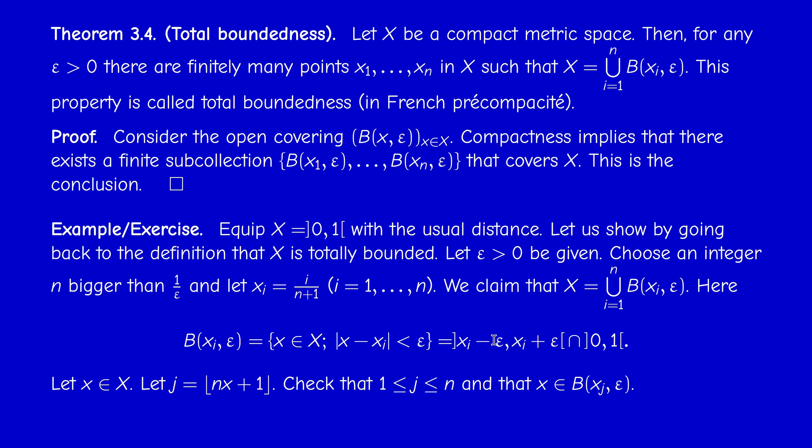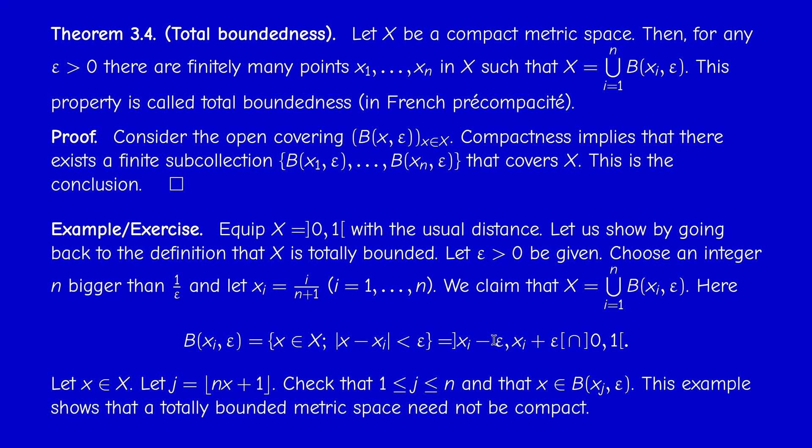Check that J is between 1 and n, and that x belongs to the ball of center x_J and radius epsilon. This example illustrates total boundedness, and also shows that a compact metric space is totally bounded but the converse is not true — we need an extra condition for a totally bounded metric space to be compact.